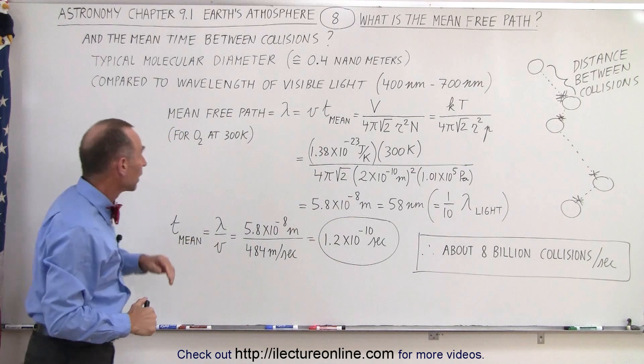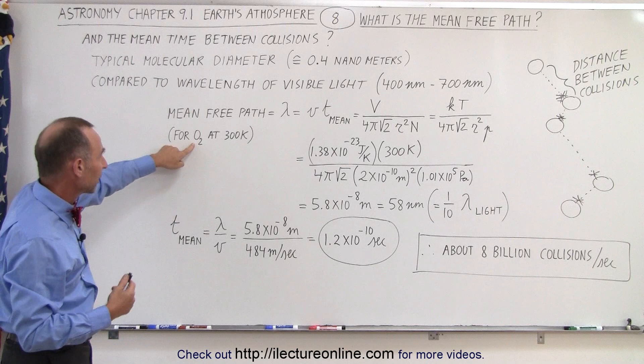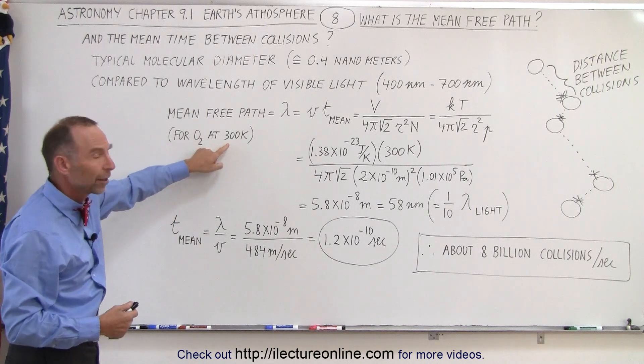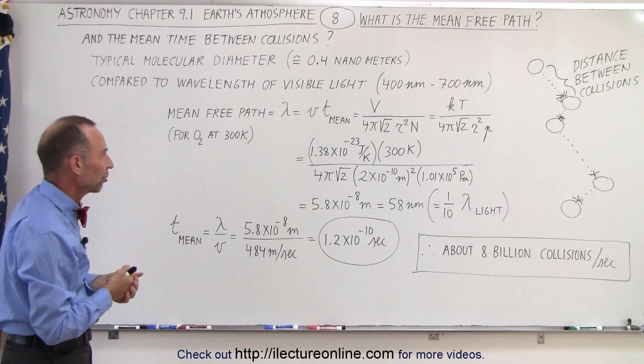So to calculate the mean free path, in this case we're going to take an oxygen molecule, a diatomic molecule of oxygen, at about 300 Kelvin, which is slightly higher than room temperature, and one atmosphere of pressure.